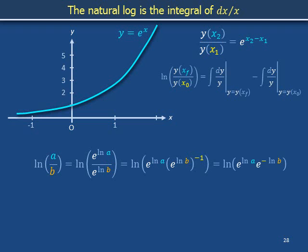Because e to the x exhibits the multiplication rule for powers, the negative 1 power of e to the natural log b is also e to the negative natural log b. Because e to the x exhibits the addition rule for powers, e to the natural log a times e to the negative natural log b is the common base e taken to the power of natural log a minus natural log b.